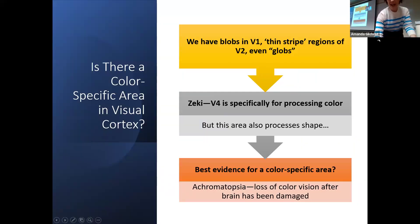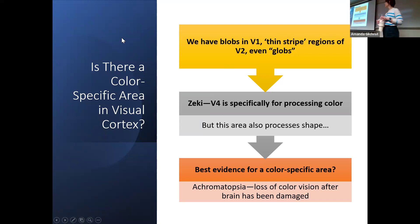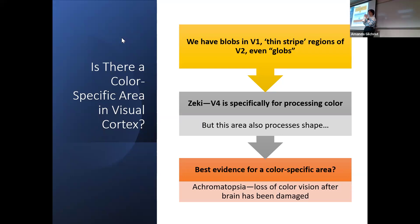Is there a color-specific area in the visual cortex? At the primary visual cortex level we have the blobs, which we talked about, along with hypercolumns. We also have what is called the thin stripe region of area V2, the secondary visual cortex, and in V2 we have globs. So we have blobs, thin stripes, and globs — such scientific names.